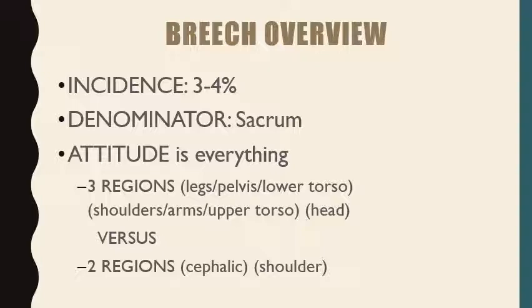When looking at how to position them, the sacrum is going to be our denominator. For attitude, that covers everything. For a cephalic presentation there are really only two regions to worry about: the head and the shoulders. But with breech presentations, we have the lower extremities, the upper extremities, and also the head — so three regions that may need maneuvering during delivery.